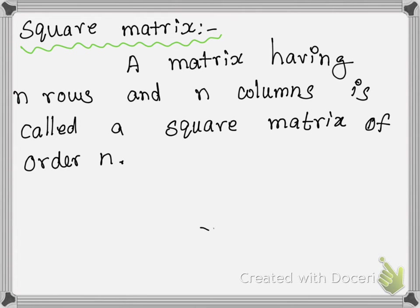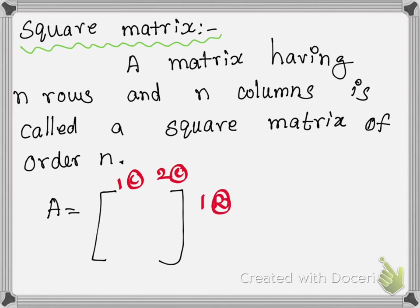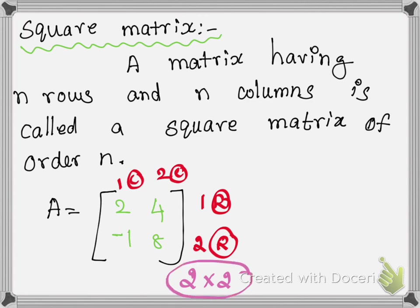This is a matrix where the number of rows and columns are the same. The elements are 2, 4, minus 1, 8. The number of rows is 2 and the number of columns is 2, so this is called the square matrix of order 2.